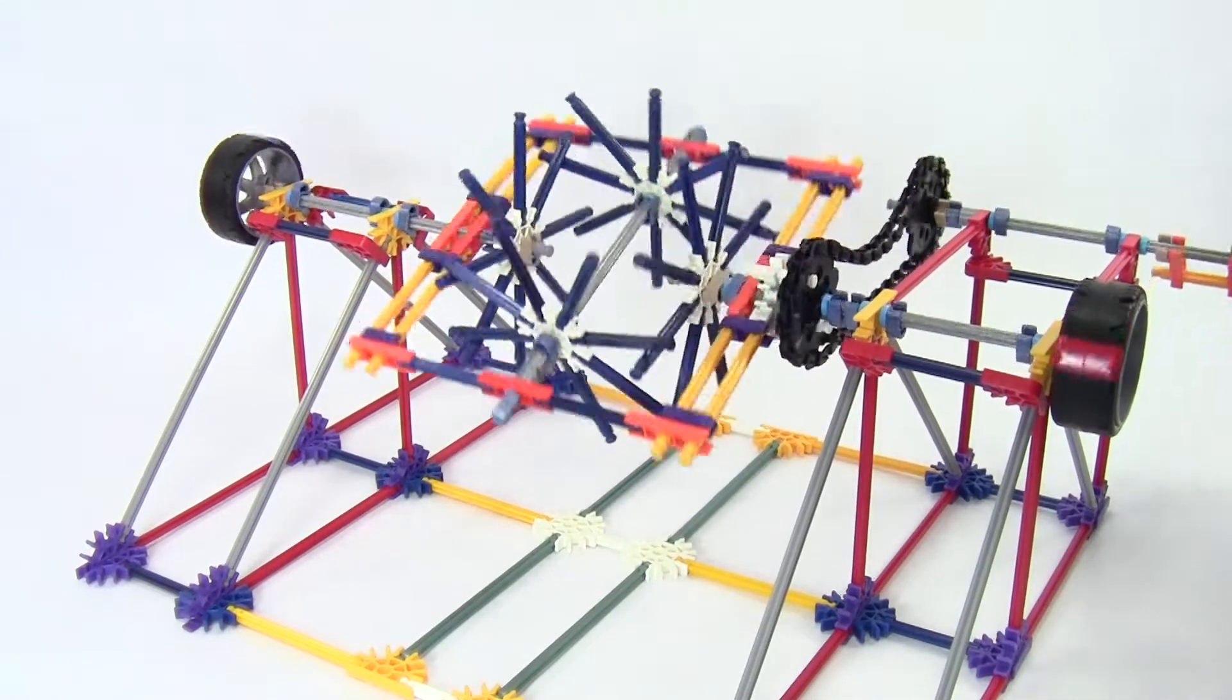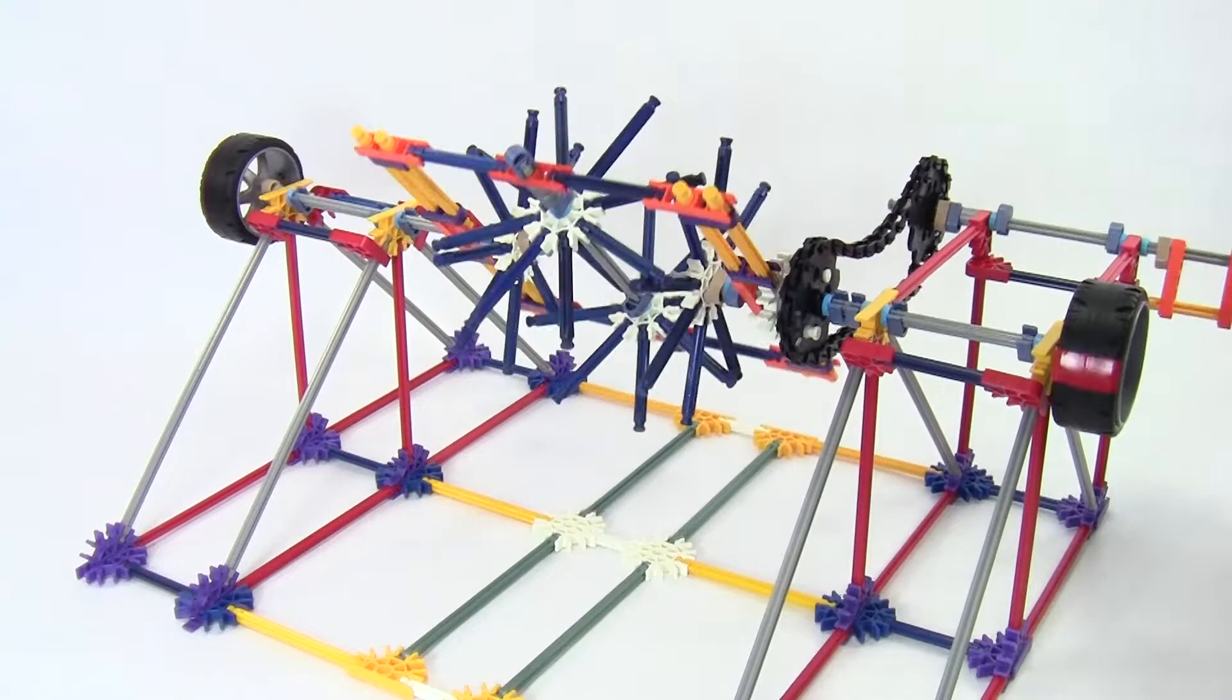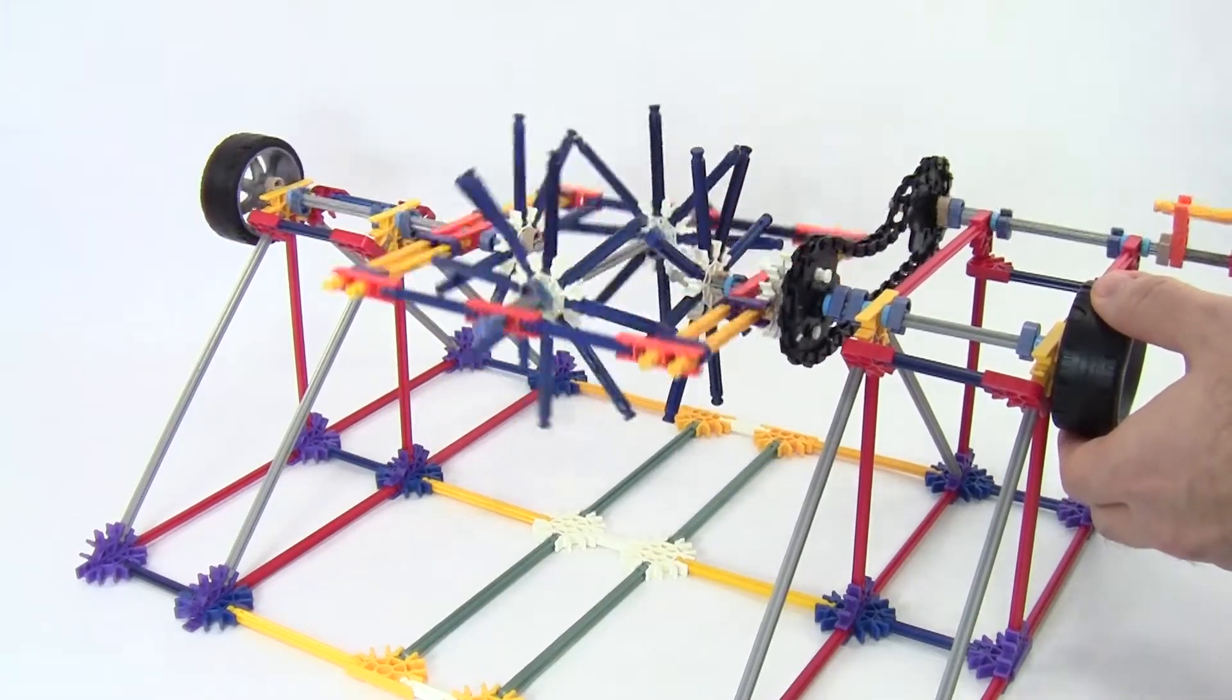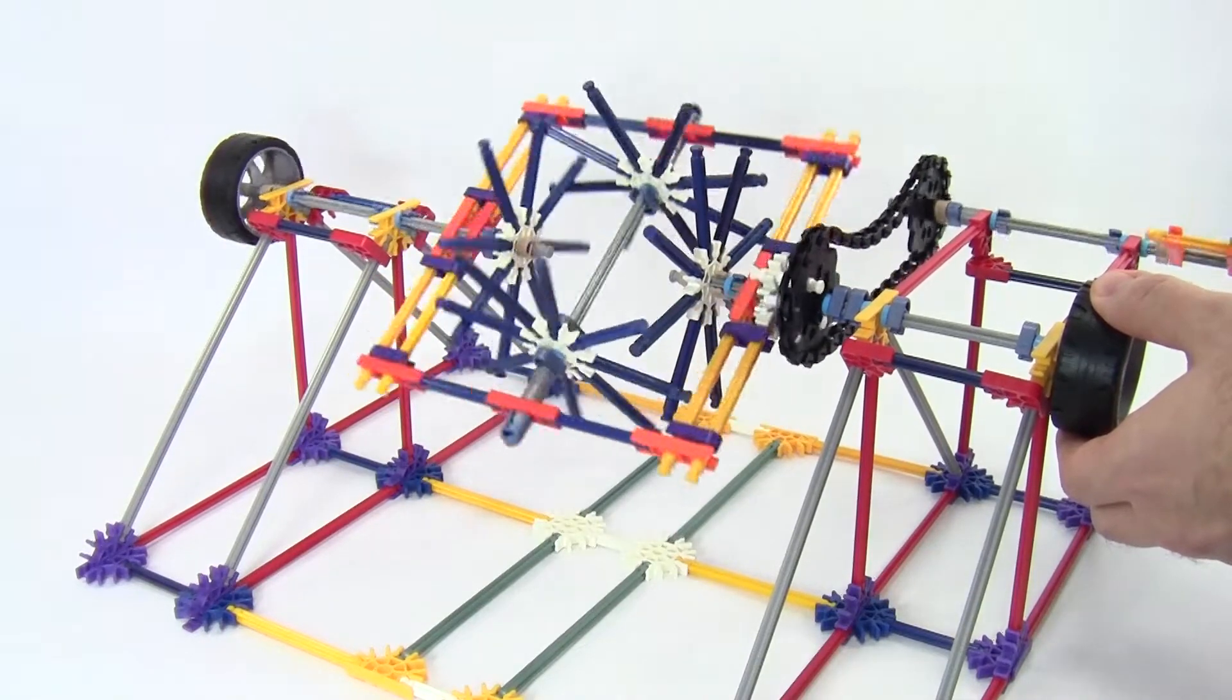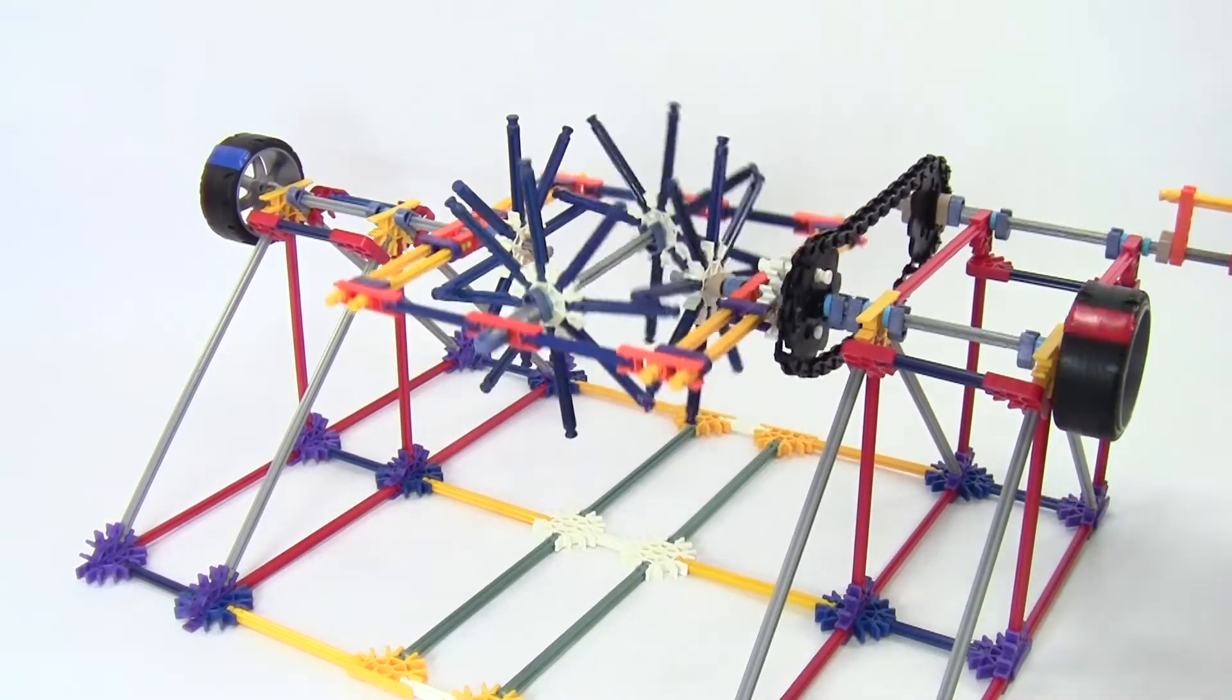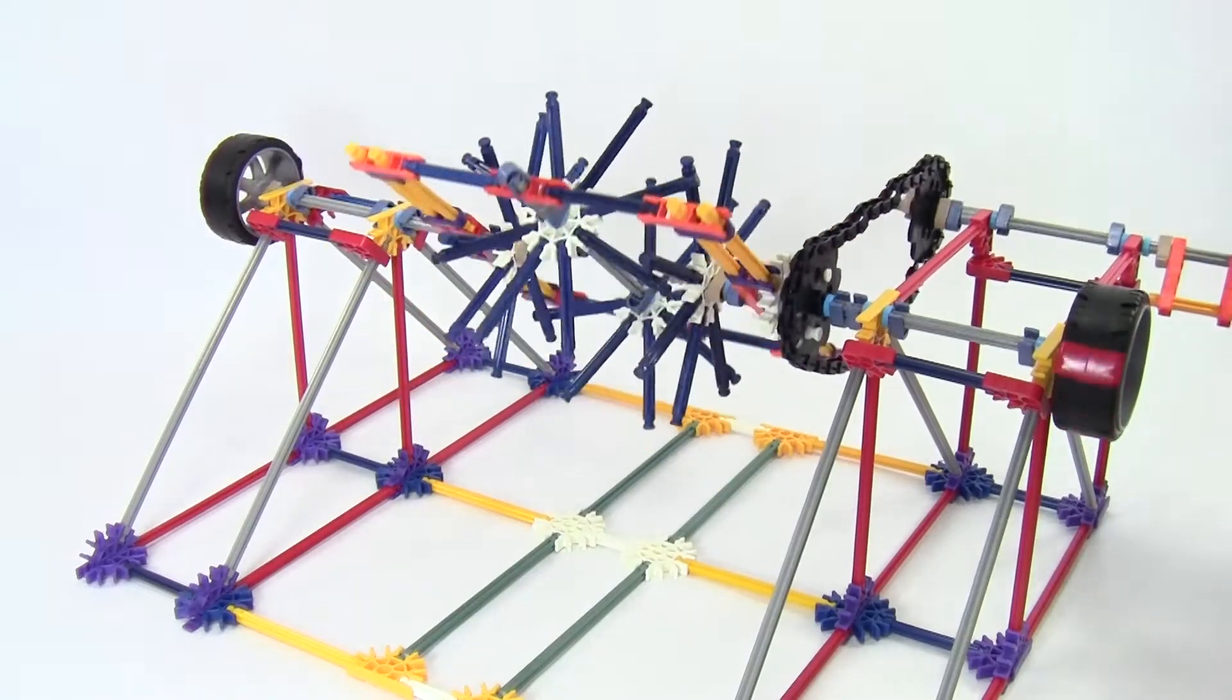Turning the chain causes both wheels to spin at the same speed. However, if one wheel starts to slip or encounters resistance and gets stuck, the other wheel can continue spinning at a different speed. Let's take a closer look at how the differential works and how you can build your own.